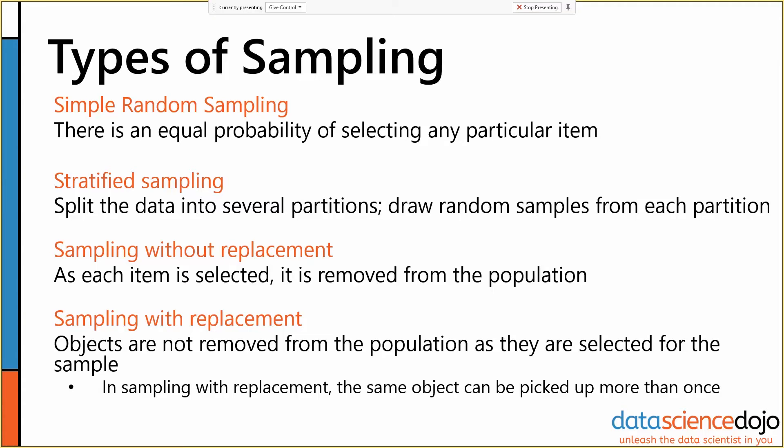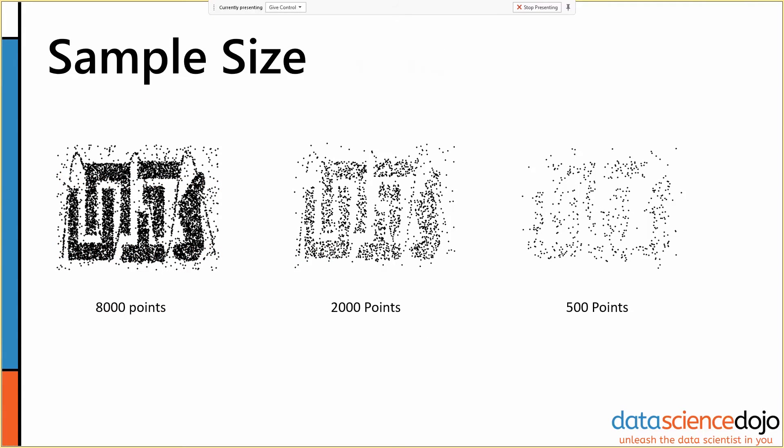So the last thing we need to think of, another aspect we need to think about around sampling is what size of sample we want to do. And I really like this picture because I think that it very excellently illustrates the problems with sample sizes. So when we sample, we do lose information, just like with aggregation.